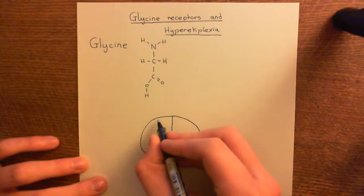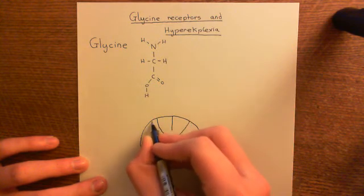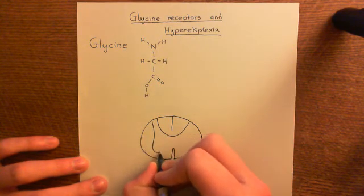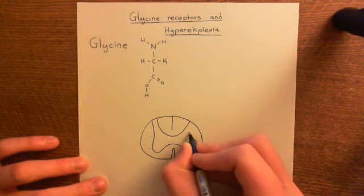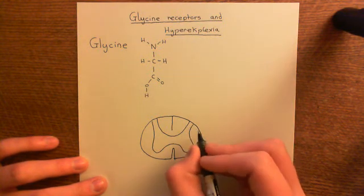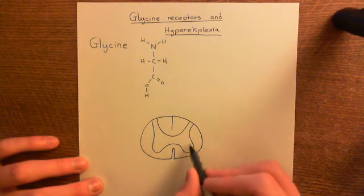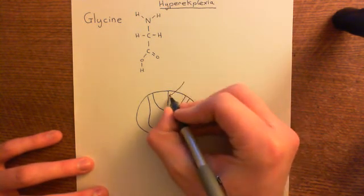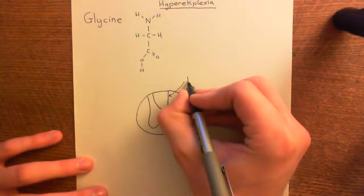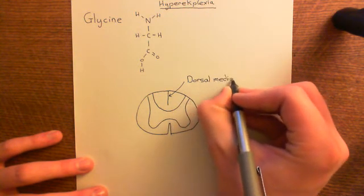Let me draw the grey matter of the spinal cord in this sort of butterfly-like shape. The spinal cord consists of both white matter and grey matter. The white matter is where you have the axons of the neurons, and the grey matter is where you have the cell bodies. This little indentation at the back is known as the dorsal median sulcus.